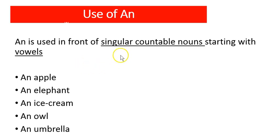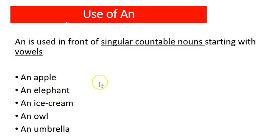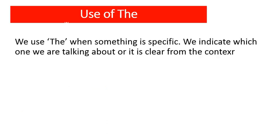'An' is used in front of singular countable nouns starting with vowels — a, e, i, o and u. For example: an apple, an elephant, an ice cream, an owl, an umbrella. These all start with vowels. So whenever a word starts with a vowel, you will use 'an.' And once again, if the noun becomes plural — for example, if 'an apple' becomes 'apples' — you cannot use an article, because a and an mean only one.